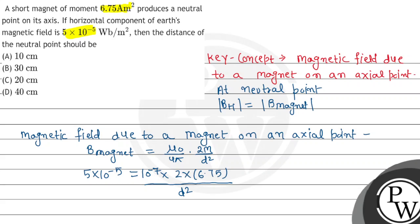On solving this, we get the value of d equals 0.3 meters, which equals 30 centimeters.